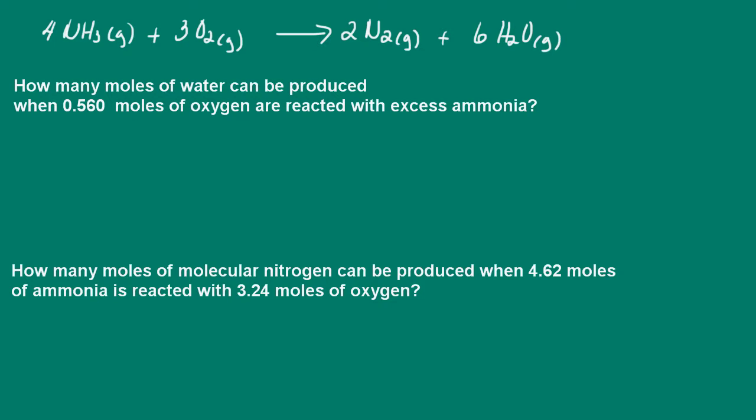So my first question is, how many moles of water can be produced when 0.56 moles of oxygen are reacted with excess ammonia? Now this is very important, this wording. We're being asked how much water can be produced when we react 0.56 moles of oxygen with excess ammonia. That means that the ammonia is in excess, so it's never going to be completely reacted. We have plenty of ammonia, but we are limited by the oxygen. So our oxygen gas then would be what we call our limiting reactant or our limiting reagent.